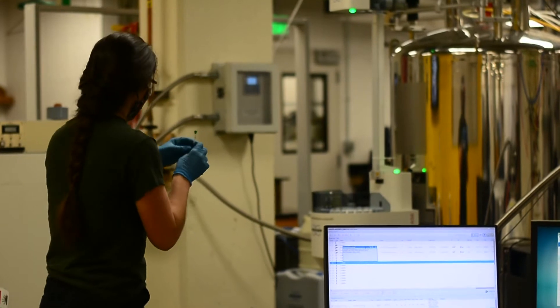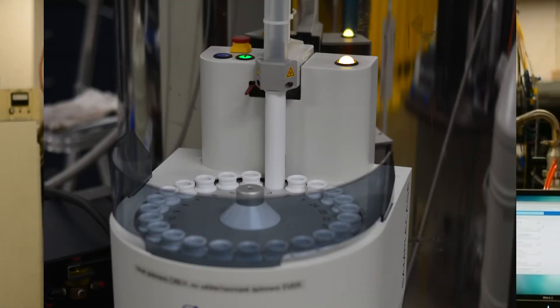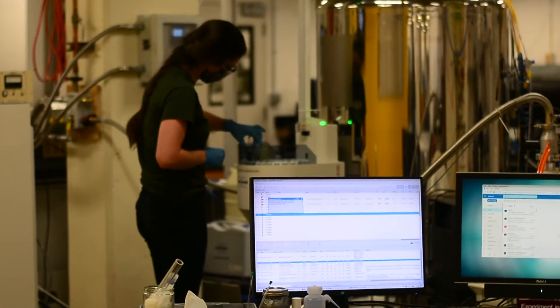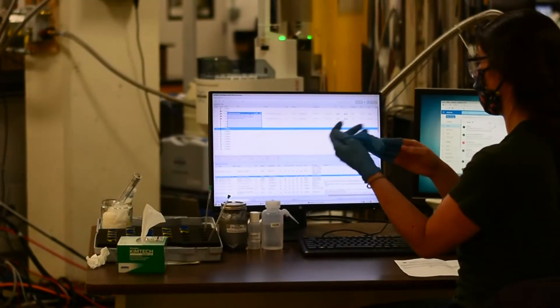Then you can find an empty slot in the auto sampler and load your sample into the auto sampler, and have a seat at the console. Remove gloves.